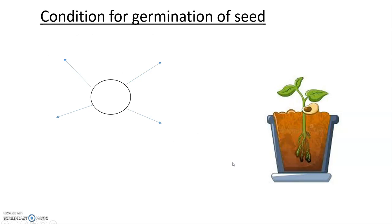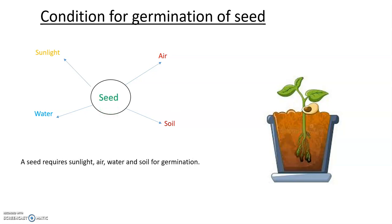The conditions for germination of a seed: First condition — sunlight. Second — seeds require air. Third — seeds require water. Fourth — seeds require soil. So these are the conditions for germination: a seed requires sunlight, air, water, and soil for germination.